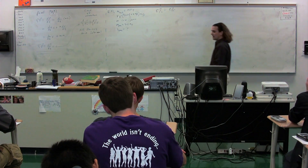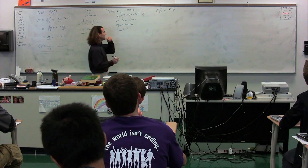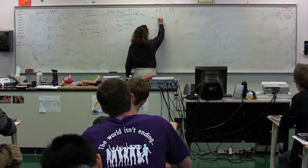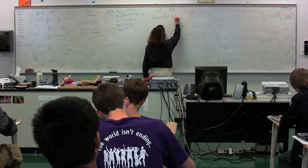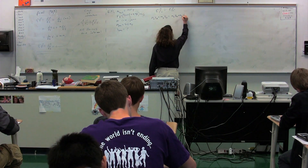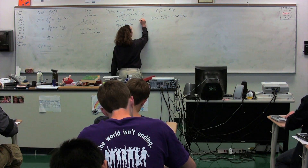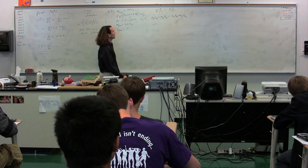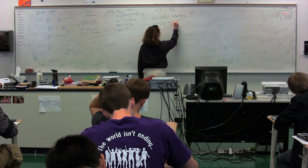The initial momentum of the system is equal to zero, because nothing is moving before the throw. So we have: mass of the ball times initial velocity of the ball plus mass of you times initial velocity of you equals mass of the ball times final velocity of the ball plus mass of you times final velocity of you. Both initial velocities are zero, so the left-hand side is zero. Therefore: zero equals mass of the ball times final velocity of the ball plus mass of you times final velocity of you.